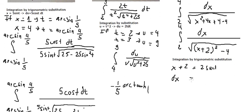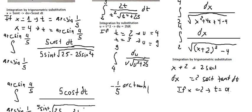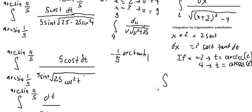So dx equals 2·sec(t)·tan(t) dt. We need to change the boundary. If x equals number 2, then t equals arc-sec of 4 divided by 2, which is arc-sec of 2. If x equals number 4, then t equals arc-sec of 6 divided by 2, which is arc-sec of 3. So we have the integral from arc-sec(2) to arc-sec(3).